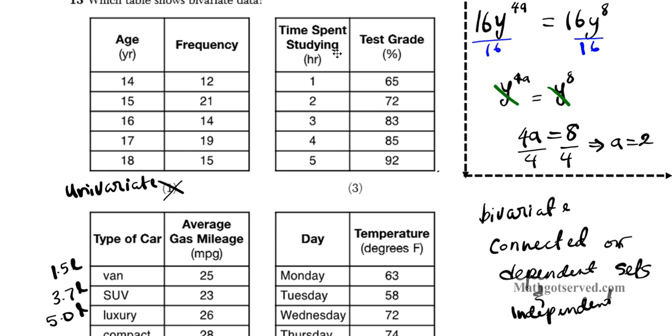Time spent studying and test grade. Are they connected? Well, there is a reasonable connection here because guess what? The more time you spend studying, what happens with your grade? Your grade goes higher. Regardless of how intelligent you are, the more time you spend studying, the more of the material you can assimilate to your mind, hence increasing your test grade. So this one is in fact bivariate because it's connected.